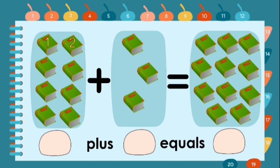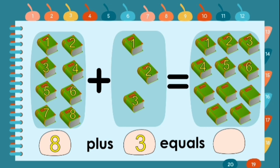Eight books. Plus one, two, three, four, five, six, seven, eight — eight books. Plus three. Equals eleven.